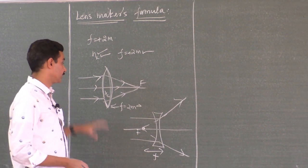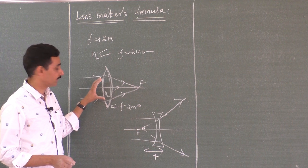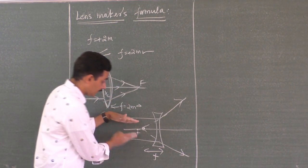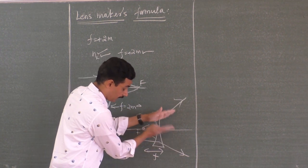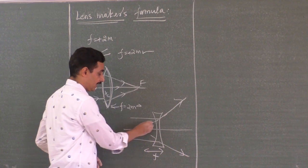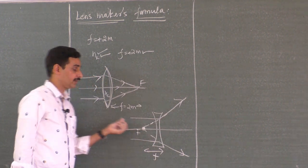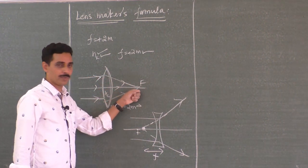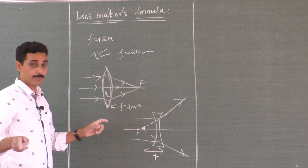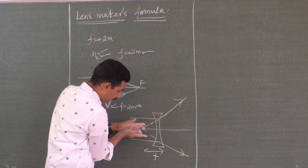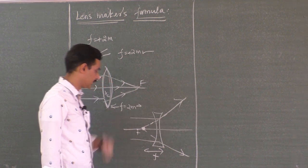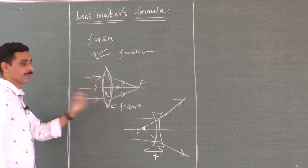Just listen to the words carefully. If parallel rays are incident on a convex lens, after refraction they really meet at a point — they converge at a point. If parallel rays are incident on a concave lens, after refraction they diverge and appear to diverge from a point. That is not real — they appear to diverge from this point. That is the focal length.